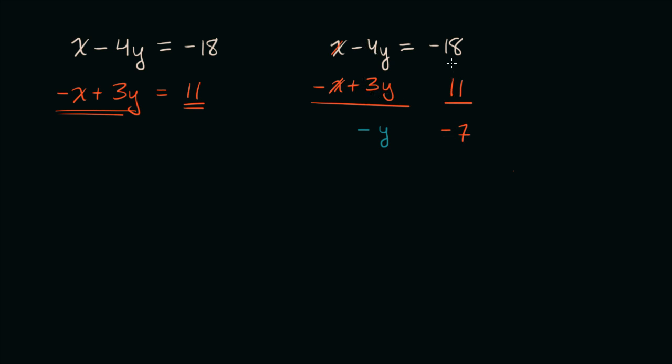And since we added the same thing to both sides, the equality still holds, and we get negative y is equal to negative 7, or divide both sides by negative 1, or multiply both sides by negative 1. We get y is equal to 7. So we have the y coordinate of the xy pair that satisfies both of these.